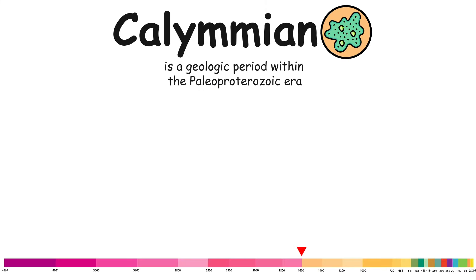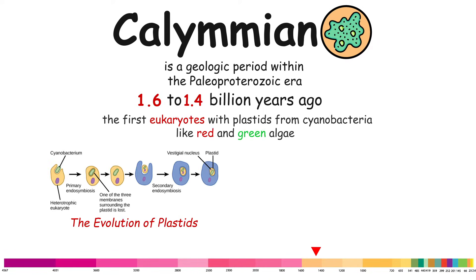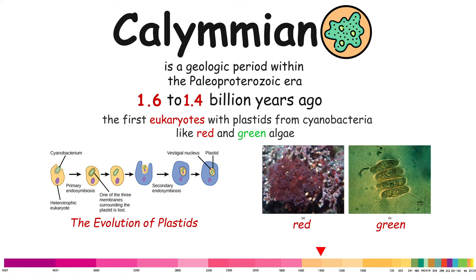Calymmian. The Calymmian is a geologic period within the Mesoproterozoic era, spanning approximately from 1.6 to 1.4 billion years ago. During this period, the first eukaryotes with plastids from cyanobacteria appeared, like red and green algae.